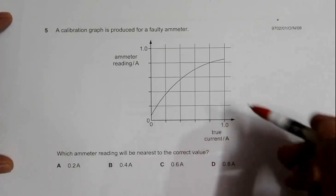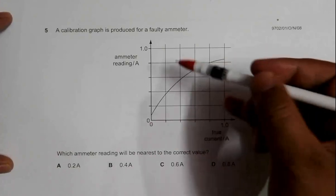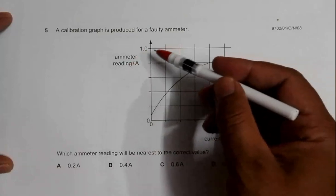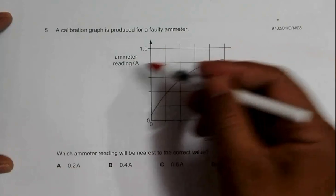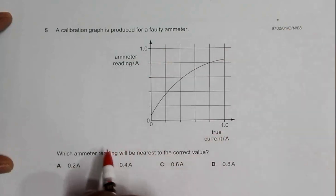The graph is shown like this: we have true current on the x-axis and the reading shown by the ammeter on the y-axis, which might not be true. As you can see, when the true current is zero, the ammeter is showing some current.